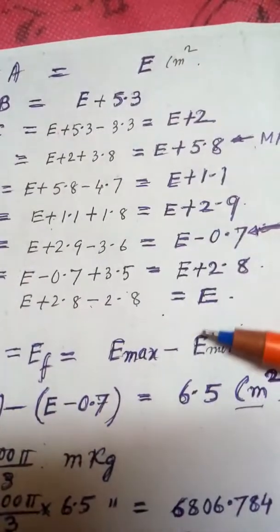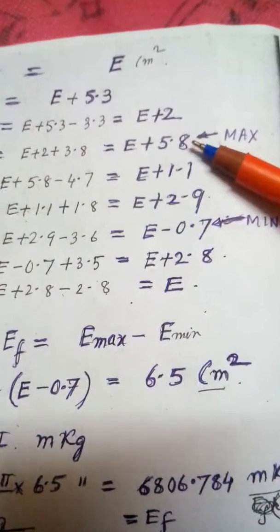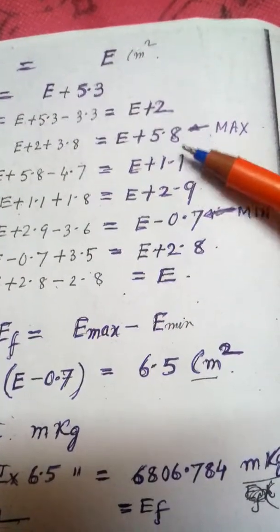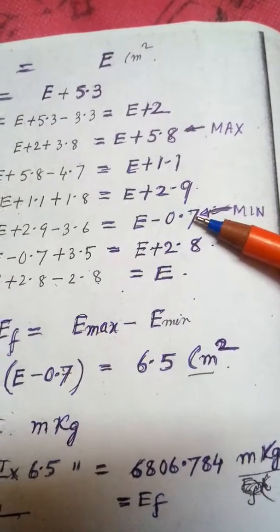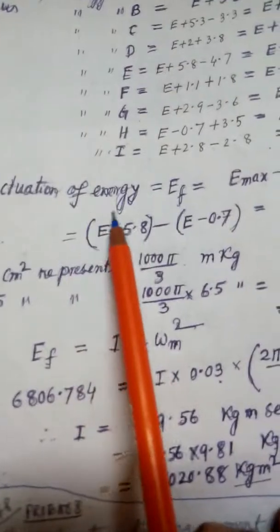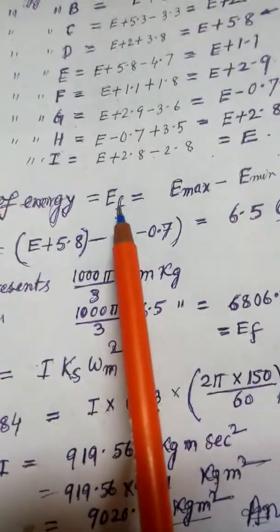Which one is the maximum? So this one is the maximum energy and this is the minimum energy. So what is the variation of energy? This is the fluctuation of energy, maximum minus minimum.